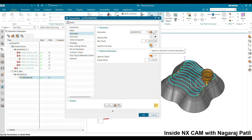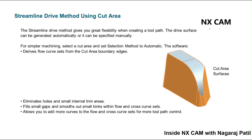Specify Criteria helps you to select the region where you want to machine. The streamline drive method gives you great flexibility when it comes to creating the toolpath. The drive surface can be automated or manually selected. The manual selection uses flow curves and cross curves as we have seen. If you select a cut area and keep the selection method as automatic, the software derives the flow curves automatically from specified criteria, eliminating holes and small internal trim areas, filling small gaps, smoothing the toolpath, and allowing you to add more curves to the flow and cross curve sets.